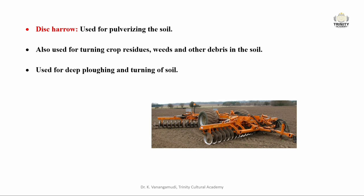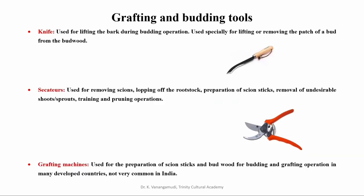Next is the disk harrow, used for pulverizing the soil and also for turning crop residues, weeds, and other debris into the soil. Now let us see the important grafting and budding tools in nursery. The first is the knife, which has a combined blade for grafting and budding purposes. It has a long blade and strong handle of either folding or fixed type, and is used for lifting the bark during budding operations.